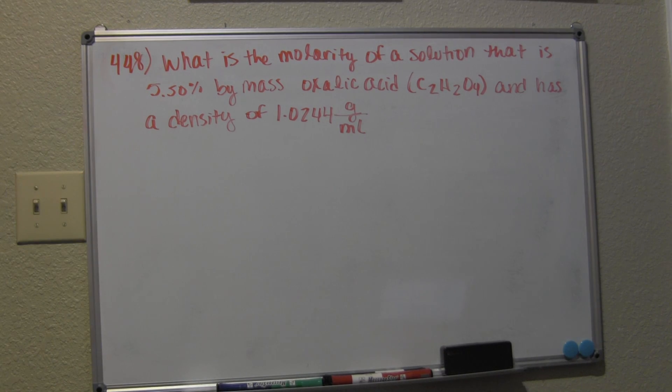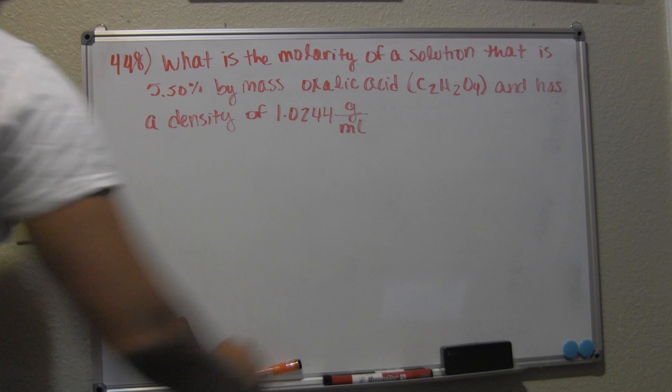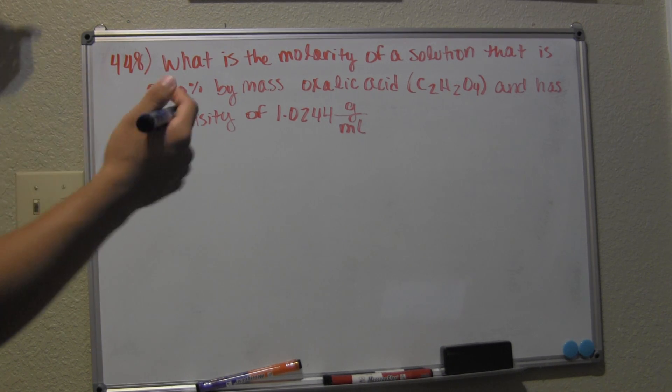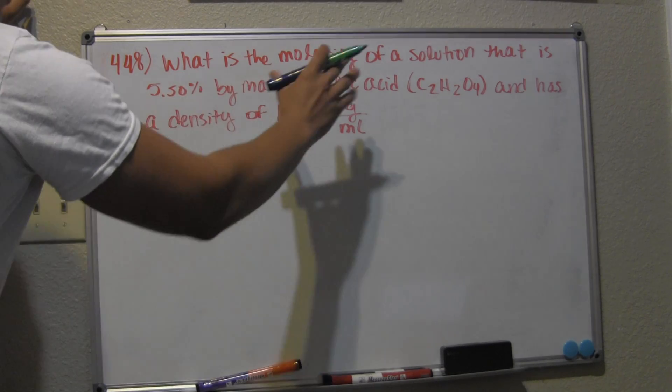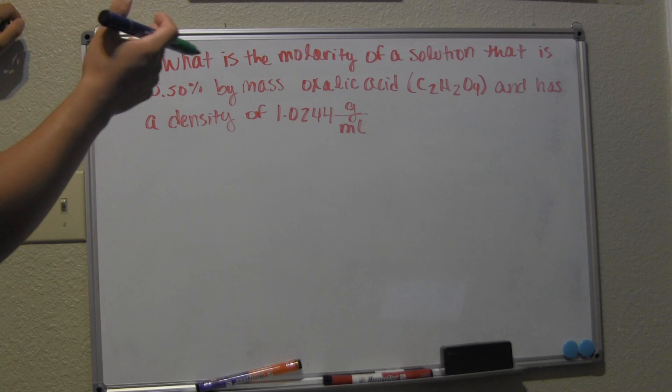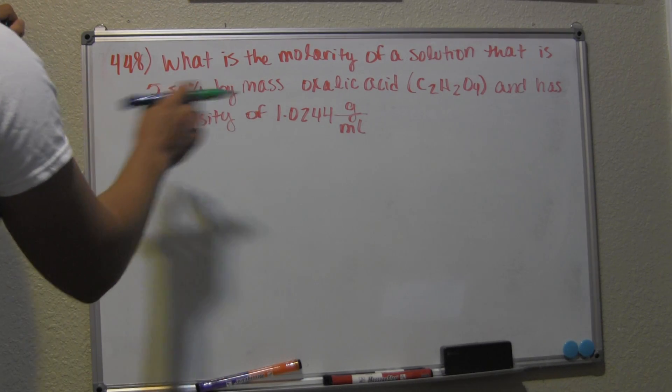The first step in solving this problem is to figure out how much oxalic acid we have in mass and how much solvent we have. I'm going to assume that we have 100 grams total, which makes our conversion of mass a lot simpler.